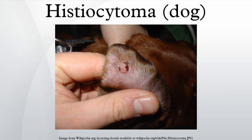Most commonly, histiocytomas are found in young dogs and appear as a small, solitary, hairless lump, although Shar Peis may be predisposed to multiple histiocytomas. They are most commonly found on the head, neck, ears, and limbs, and are usually less than 2.5 cm in diameter. Ulceration of the mass is common.